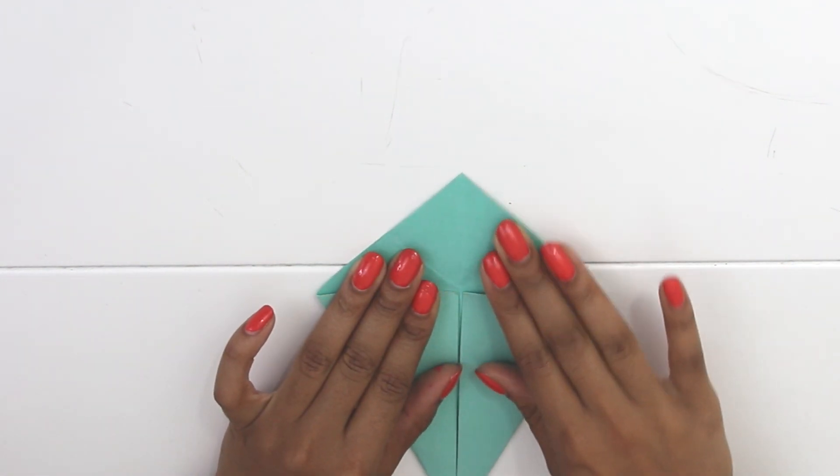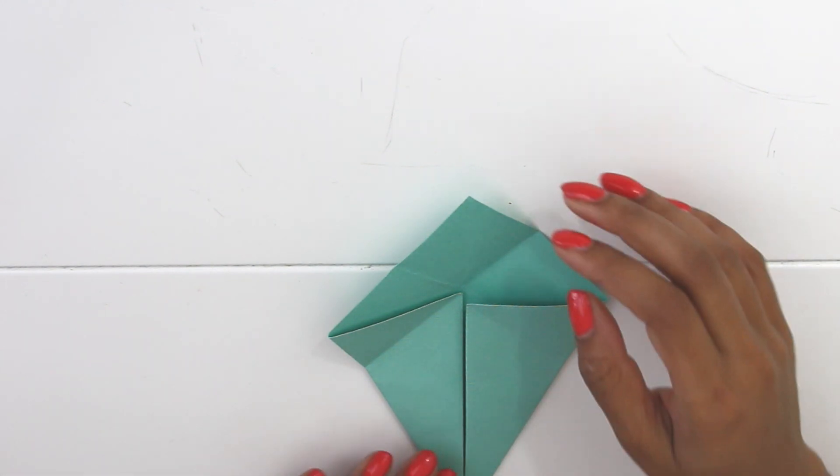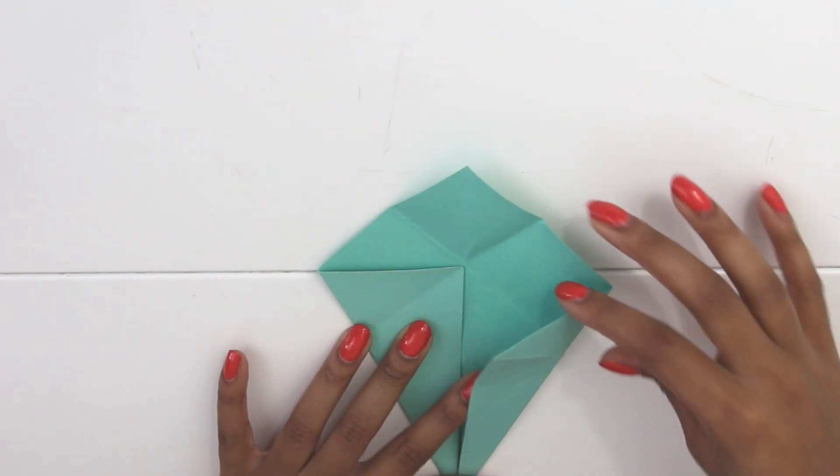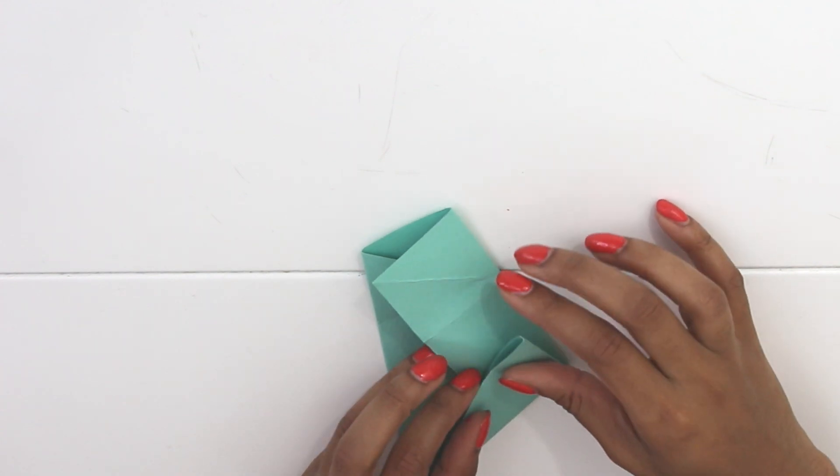Jusqu'à maintenant ça va, mais là on va passer à une partie un peu plus compliquée à comprendre. Donc il faut replier la partie de gauche et inverser le sens du pliage de la partie de droite. Donc ça doit vous donner un truc comme ça.